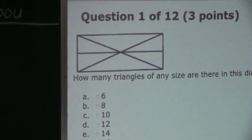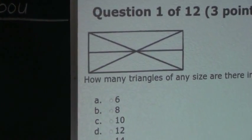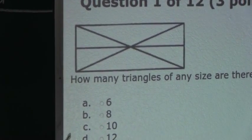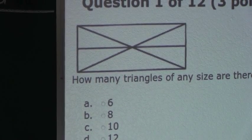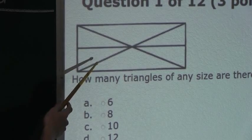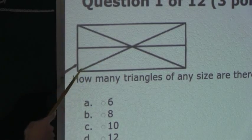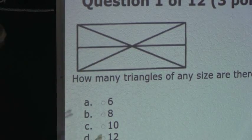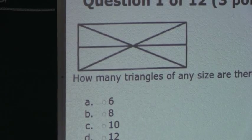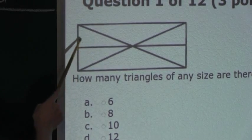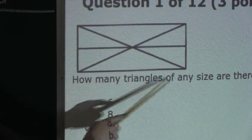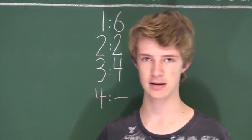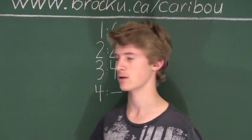Now let's look at all the triangles that consist of five single triangles. Again, this diagram only consists of six single triangles. So if you were to take away any one of these triangles, you would be left with not a triangle shape. For example, if we took away this single triangle, we would be left with this shape, which is not a triangle. So therefore, we have no triangles that consist of five single triangles.